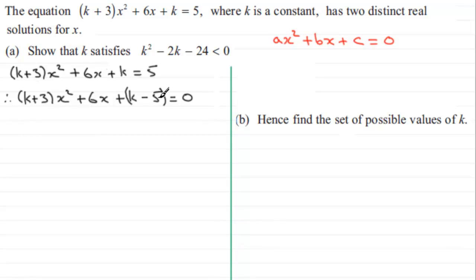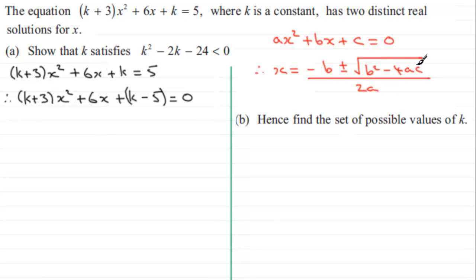Now, given that it has two distinct real solutions — you'll often see this written as two distinct or two different real roots for x — the roots of a quadratic equation are given by the equation x equals minus b plus or minus the square root of b squared minus 4ac, all divided by 2a. It's this part inside the square root that controls the nature of the roots. If b squared minus 4ac is positive, greater than zero, we end up with two solutions for x. This is covered on my website, examsolutions.net, under roots of a quadratic equation. The quantity b squared minus 4ac is called the discriminant.